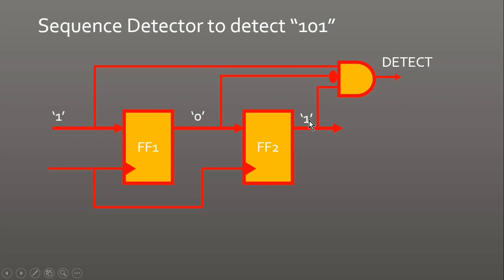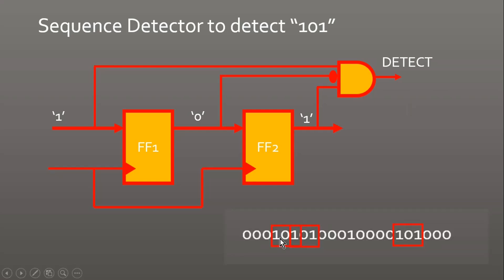The detect flag goes high only when 101 is detected; any other pattern on those three taps keeps detect low. Considering a particular SI sequence, the detect flag toggles each time 101 appears — once, then a second time, then a third time. Importantly, this sequence is overlapping, making this an overlapping sequence detector for 101.